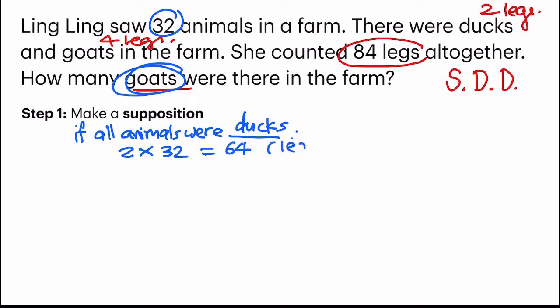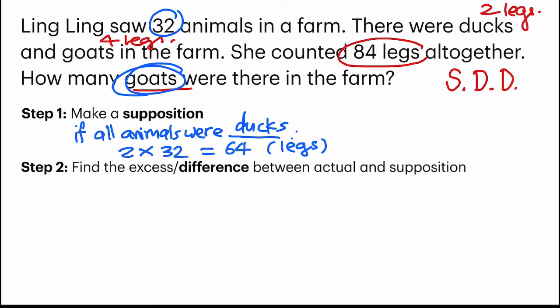And this 64 refers to the legs of all the ducks. But let's make a comparison. In the question, they say there are 84 legs, but when we make a supposition, there are only 64. So step number two, we have to find the excess or the difference between the actual and supposed for the number of legs. This can get a little bit tricky, so we break it up into two parts.